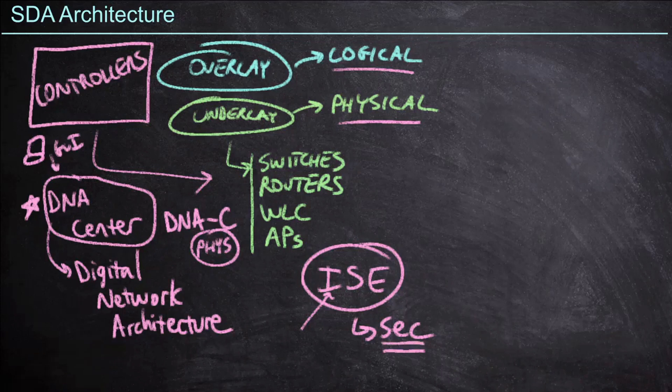ISE can be deployed as a physical machine, but can also be deployed as a virtual machine into your data center environment. So at this point, there are three main components we need to be aware of. First, the physical network equipment, which could consist of switches, routers, wireless controllers, and access points. Second is DNA Center as a controller. And third is ISE. These are the three main components that are going to comprise the architecture of software-defined access.